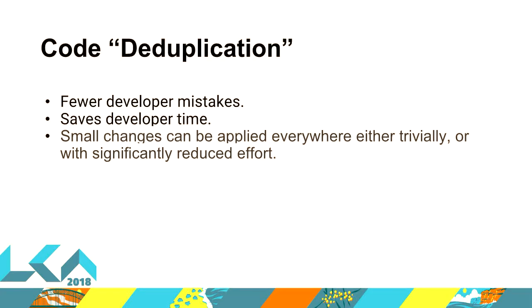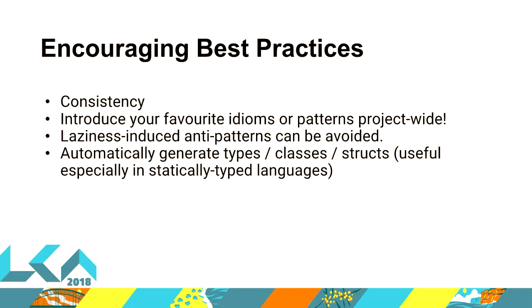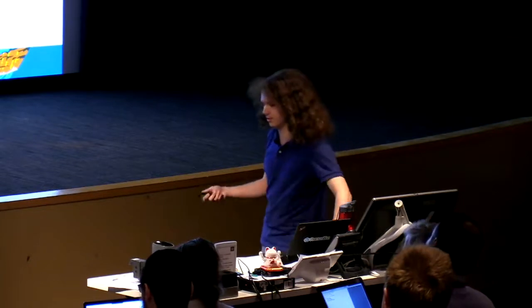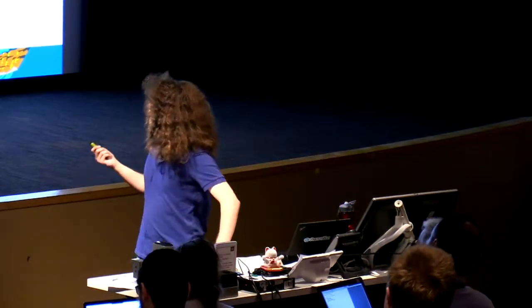Why would we want to do that? One reason is code deduplication. It's not quite deduplication because the code still exists, but it has most of the same benefits. You end up with fewer developer mistakes, saves a lot of time, and if you need to change a small thing in your generated code, it's very easy to do so. It can also help encourage best practices. Since a human isn't writing the boilerplate, you'll end up with very consistent code — they won't introduce creative things. You can introduce whatever idioms you think are suitable and avoid developer laziness contributing to mistakes.